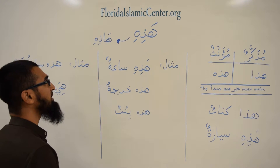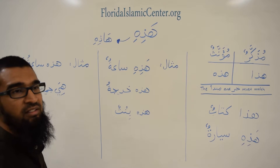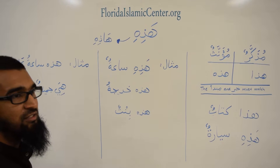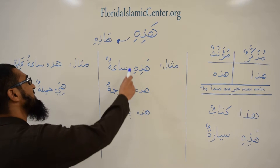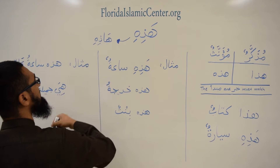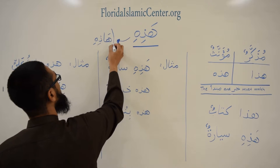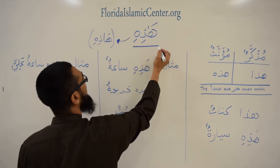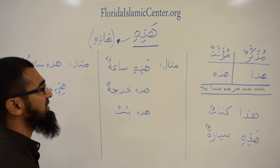So we start off with 'hadhi'. Hadhi is the feminine version of 'hadha'. Hadha means 'this', and hadhi also means 'this' but it refers to something that is feminine. Hadhi is pronounced as 'hadhi' — there's an additional alif there that's not written, but you need to know it when you pronounce it.